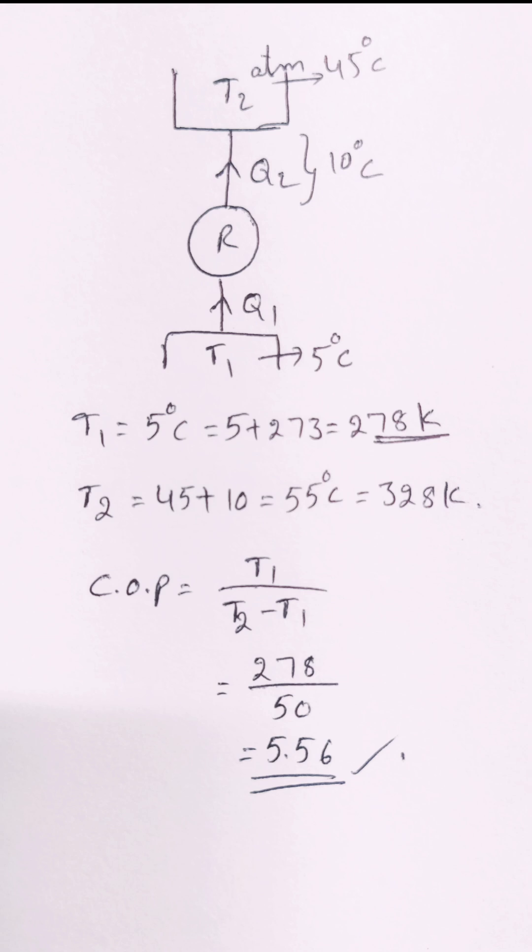The COP formula is T1 divided by T2 minus T1. Convert temperatures to Kelvin. So 278 divided by 328 minus 278. That equals 278 divided by 50, which equals 5.56. So this is the COP.